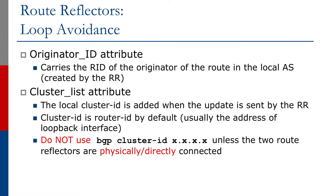Two new BGP attributes are introduced with route reflectors. The originator ID attribute carries the router ID of the originator of the route into the local AS, and it is created by the route reflector. The cluster list attribute contains the router ID of the route reflector that reflected the prefix, providing a useful way to track which route reflectors a prefix passed through on its way from source to destination.